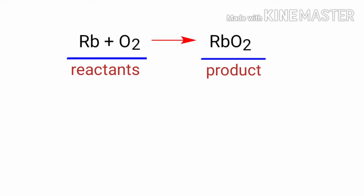In this equation the reactants are rubidium and oxygen, and the product is rubidium superoxide.